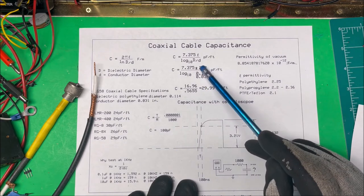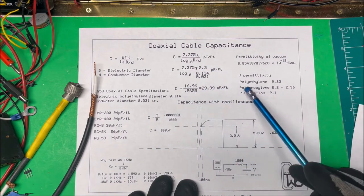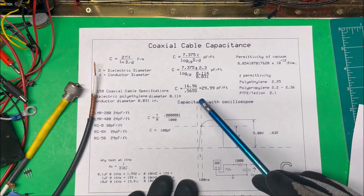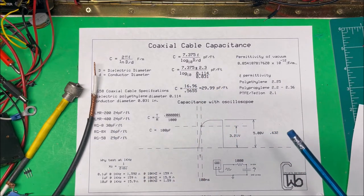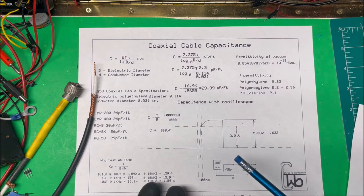I should have changed this number up here to 2.0. I think it's polyethylene of 2.25. My number would have come out better, but I'm going to test it on the scope anyway. I'm going to test my capacitance.